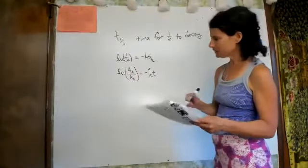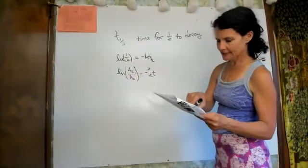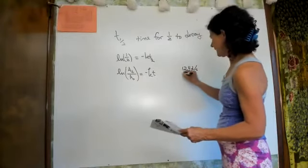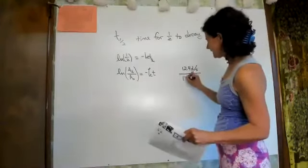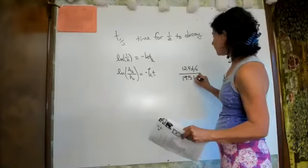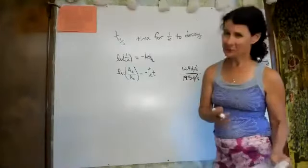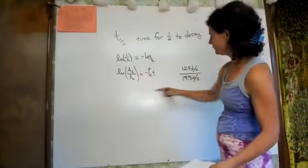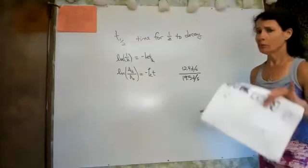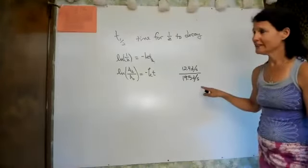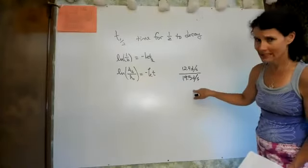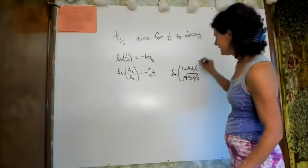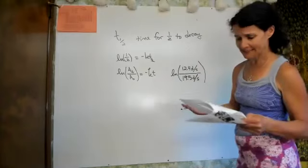This problem gave us the amount of carbon-14 as 12.4 disintegrations per second. Students always ask what those units mean — it doesn't really matter; the two values just have to be in the same units because it's a ratio. Final is always less than initial. Without doing any calculations, you know the answer is less than one half-life.